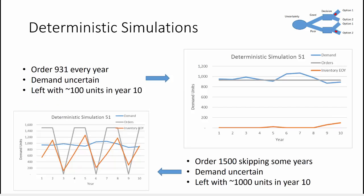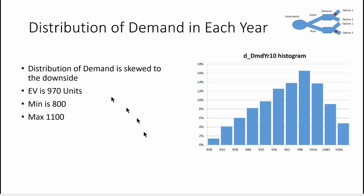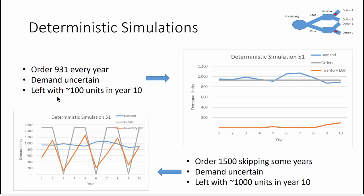So what does a deterministic simulation look like? Let's make sure we understand what we're talking about. Let's assume that we're going to start with this. We're going to order 931. Remember, we said that the expected value number of units is 970, so we're actually ordering fewer than the expected value. The grey line represents how many units we order each year. The blue line represents the demand in this particular simulation. We're going to run a thousand of these simulations. And then the gold line represents how many units are on hand at the end of the year.